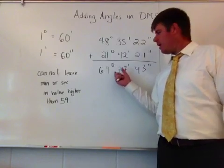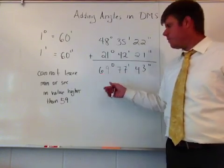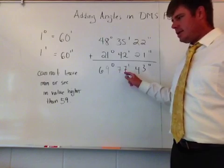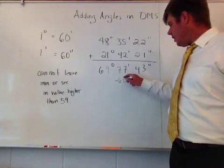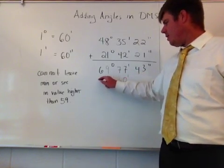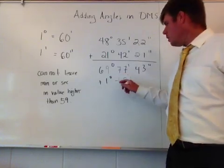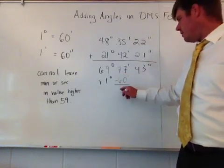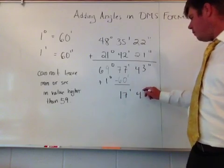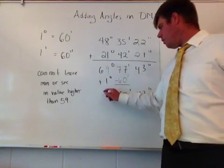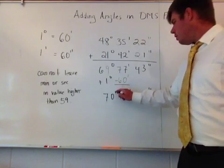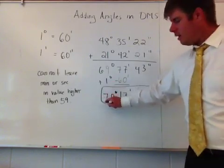If one degree is 60 minutes, I'm just going to take 60 minutes out of this and plug it into the degrees. So taking 60 out of that—minus 60 minutes—and when I minus the 60 minutes, I'm going to add one degree over here. This right now is going to give me 17 minutes.